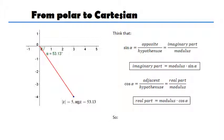So ultimately, how am I going to get in the Cartesian form? Well, I know what the real part is. It's the modulus times the cosine of alpha. So that's just going to be the real part. And the imaginary part is just going to be the modulus times the sine of alpha.